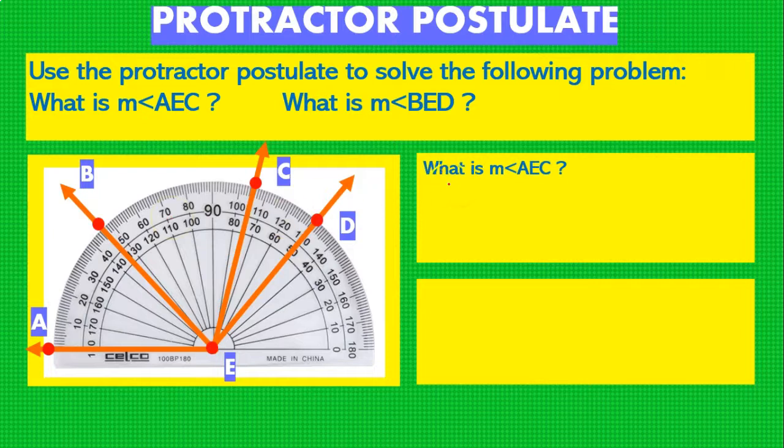So what is the measurement of angle AEC? The first thing we can see is that the ray EC, we can assign it a value, a real number value because of the protractor postulate, and we can assign it the value of 105 correct? Now because we have 105 here and we know that EA has a value of 0, what we can do is that the measurement of angle AEC is going to have a value of 105 minus 0, which is going to be a value of 105 degrees because again of the protractor postulate.